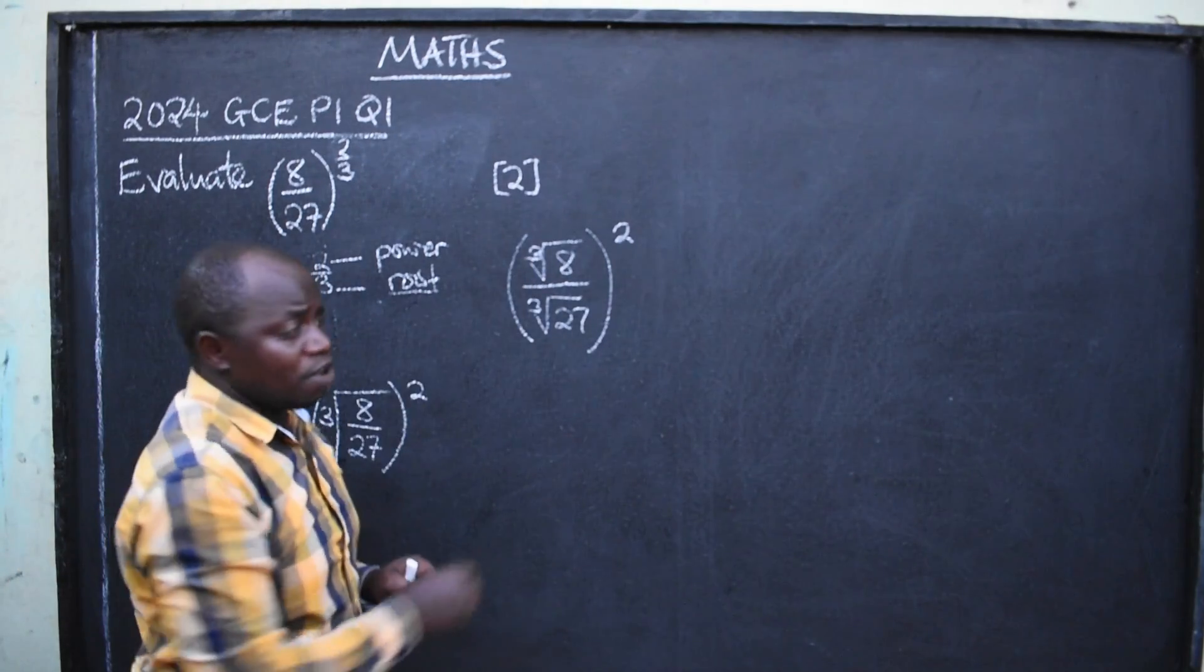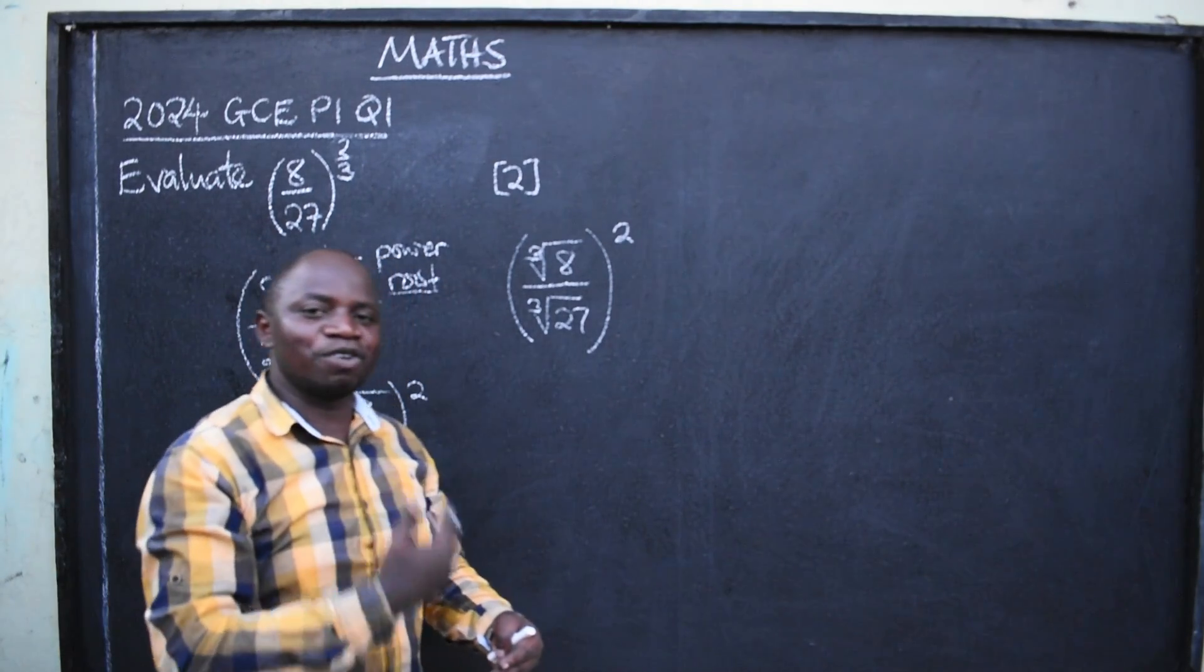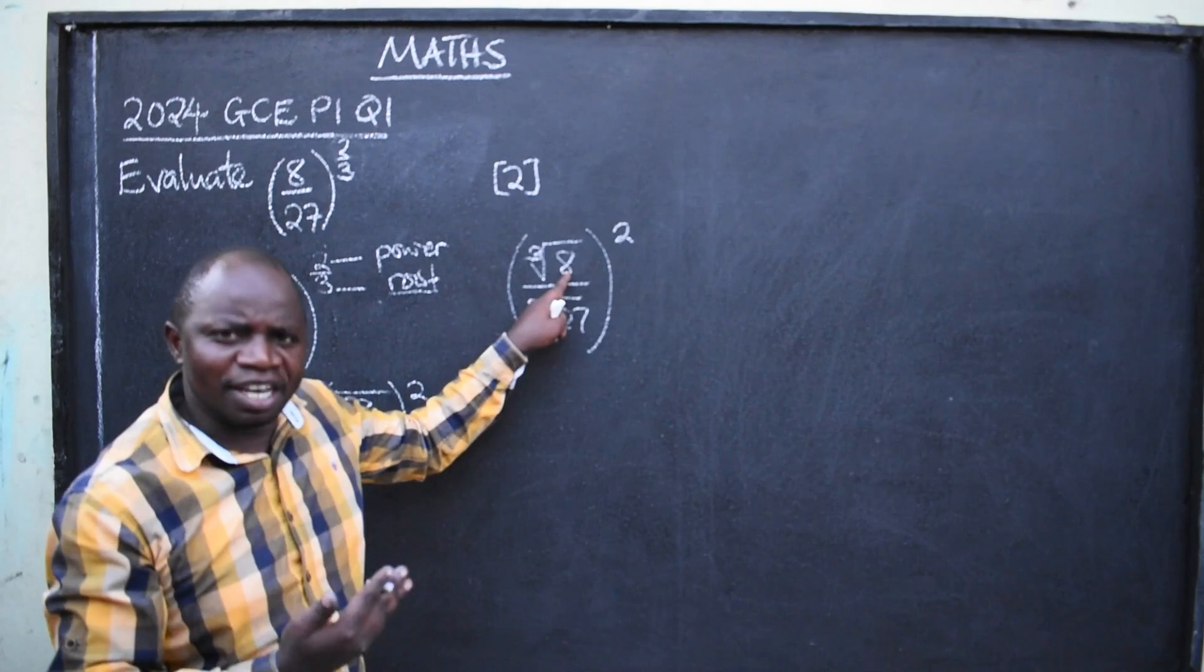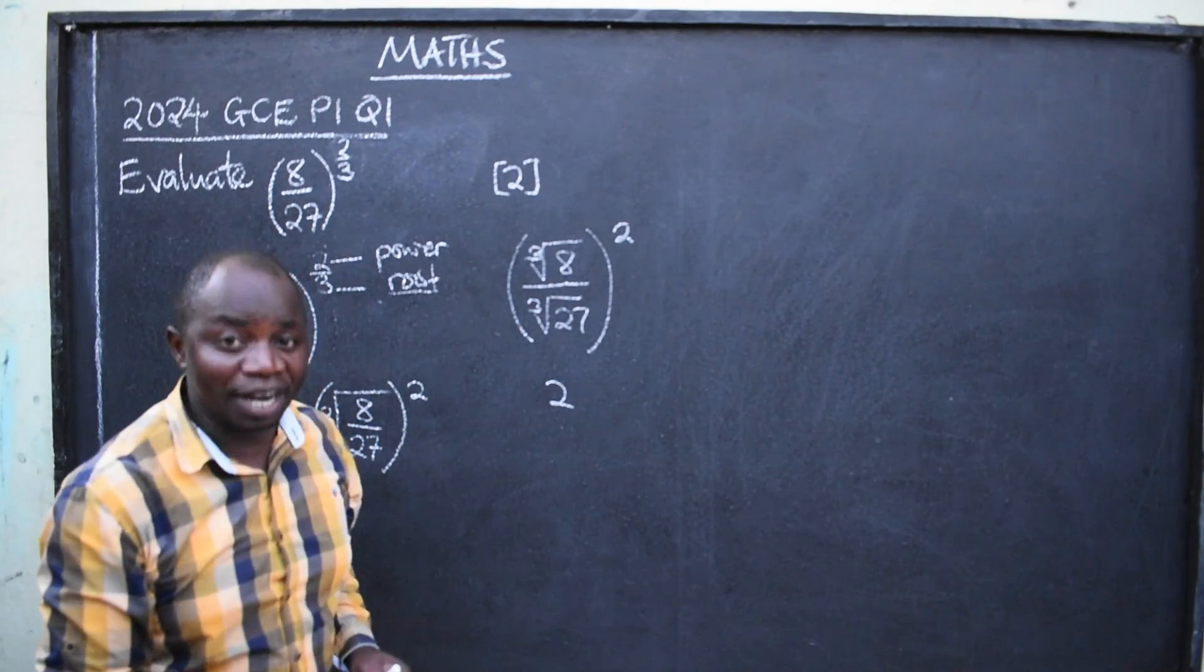Then you ask yourself, cube root of 8, it means the number you can multiply itself three times and it should give you 8. What number is that? 2.